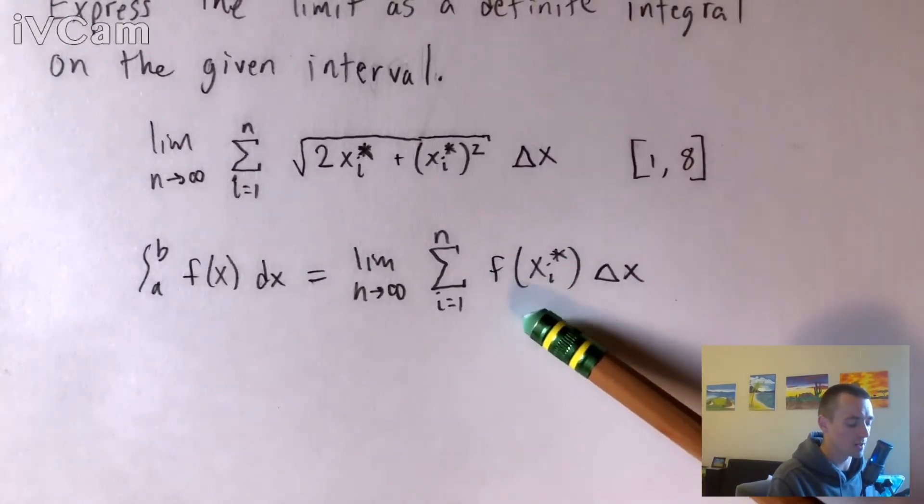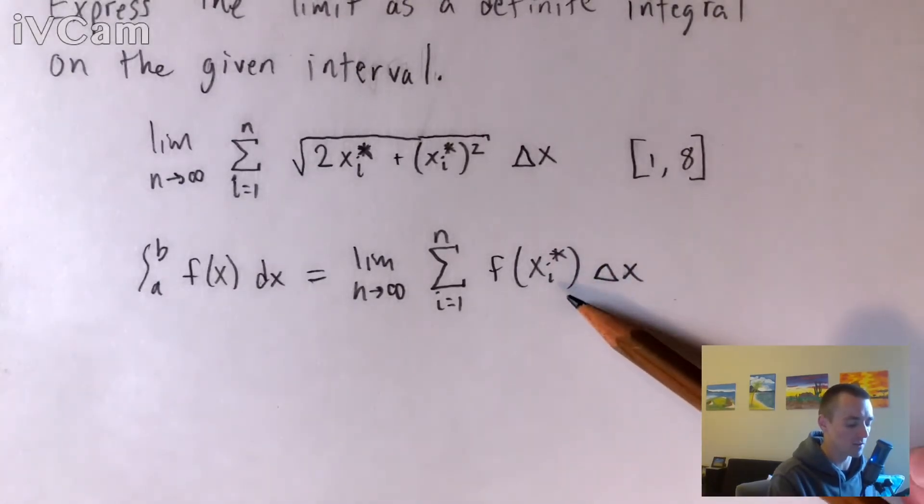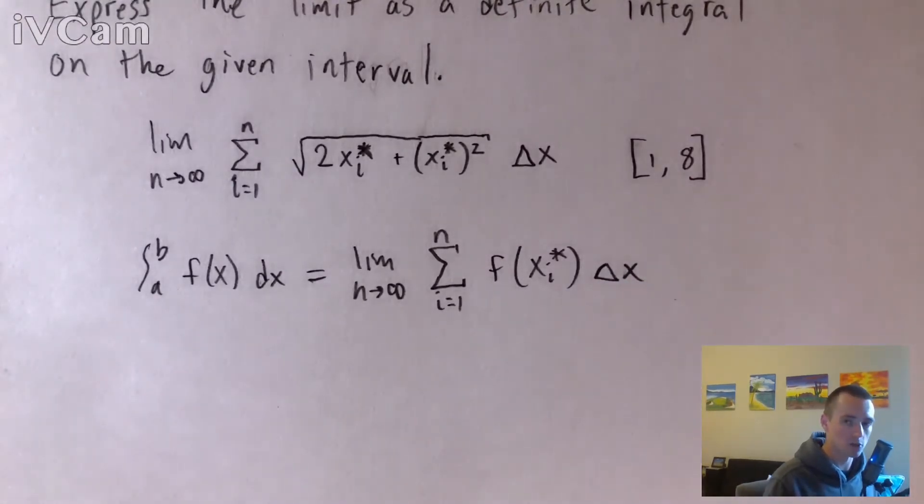and you're plugging in xi star. Where xi star is essentially each split, as you kind of imagine slicing up the area under a curve into a bunch of little slices. This is all the edges of those splits. So this xi star is just each x value as you iterate through.